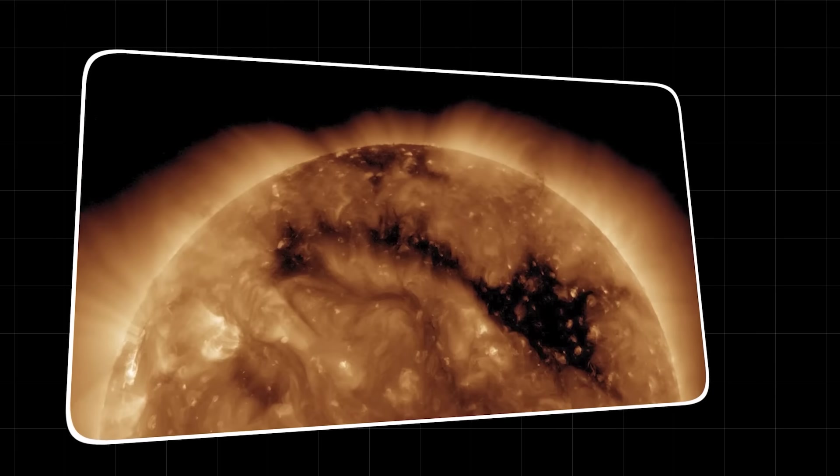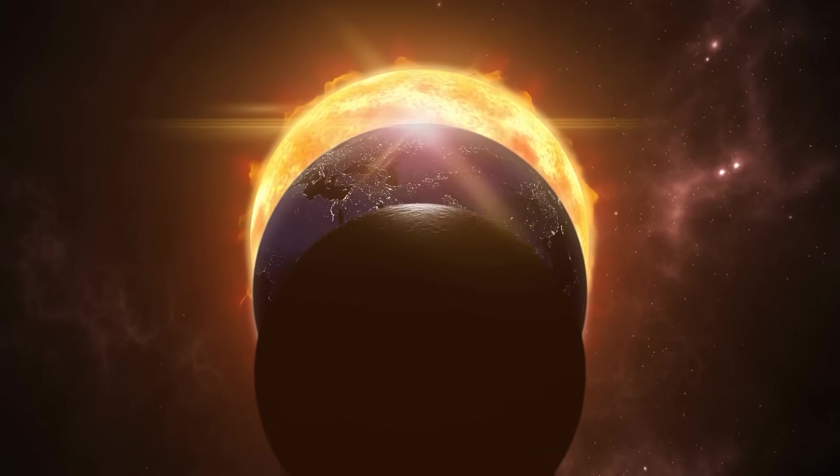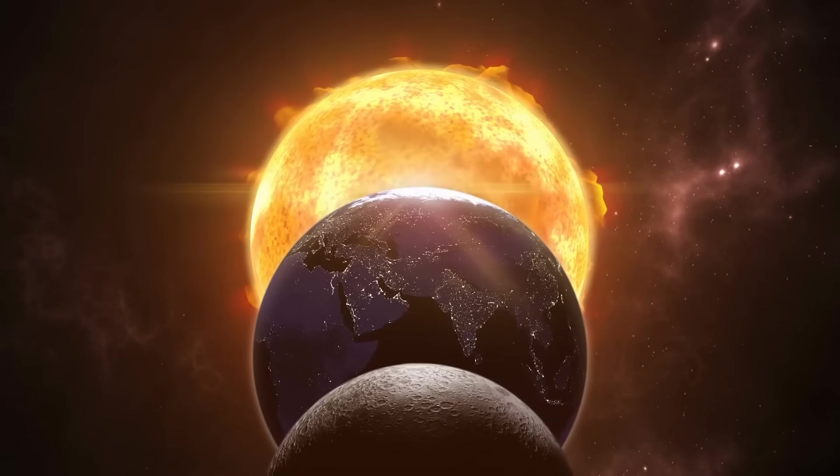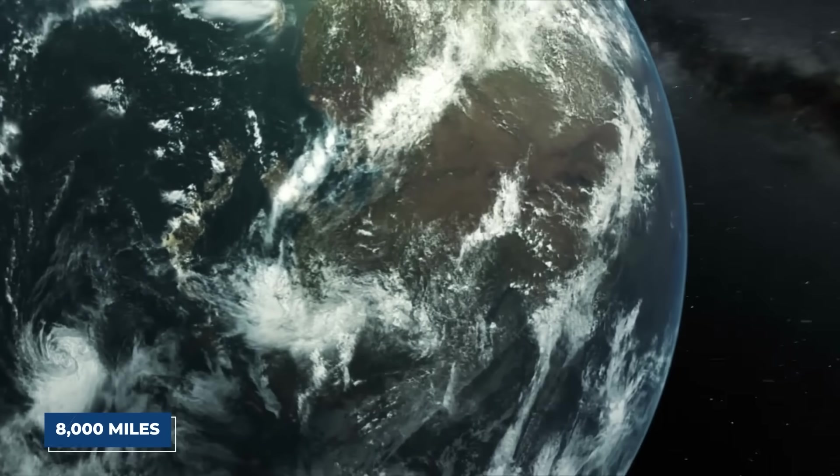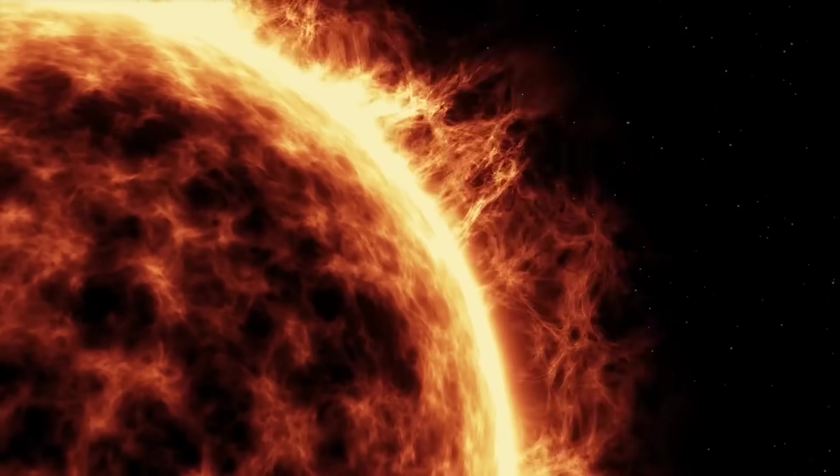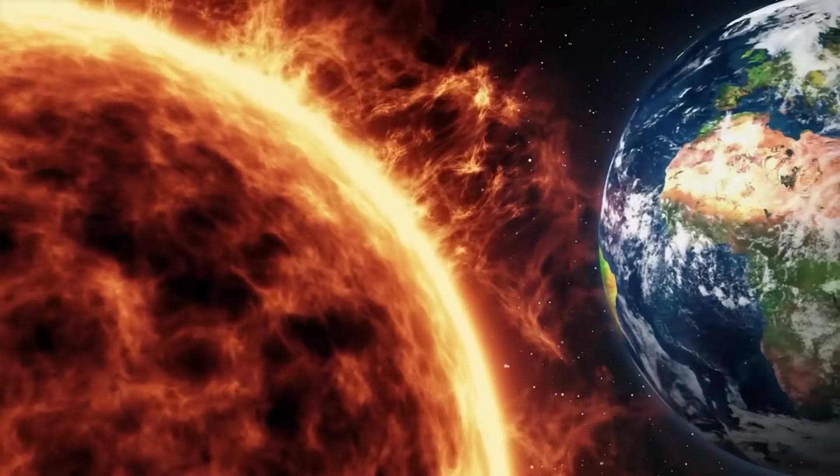The thing nobody tells you is the scale. This hole was estimated to be tens of thousands of miles across, large enough to engulf multiple Earths. To give you some perspective, our Earth has a diameter of roughly 8,000 miles. Imagine a dark patch on the Sun that could swallow five or six of our home planets without a burp.